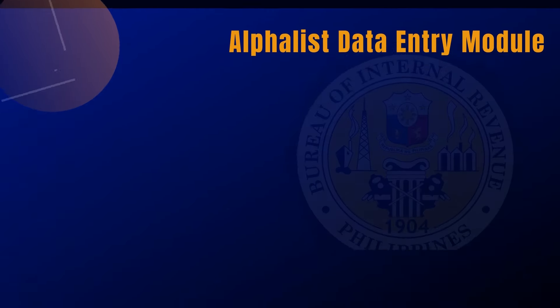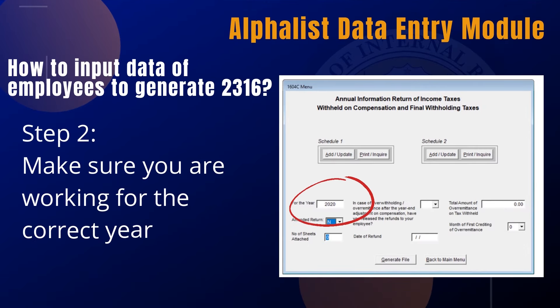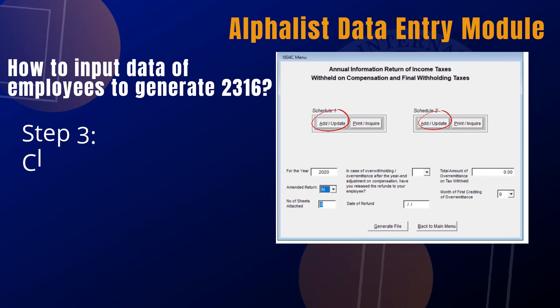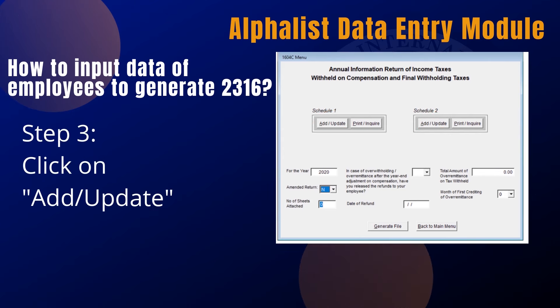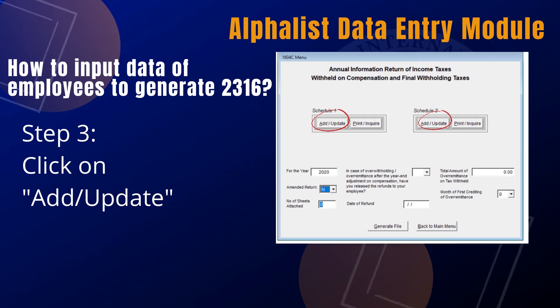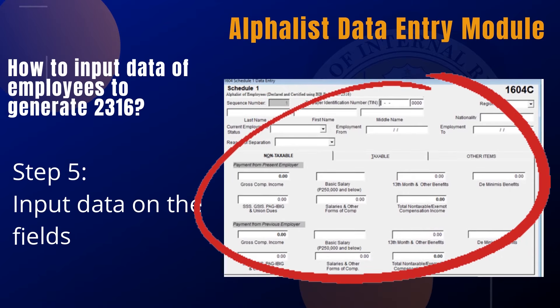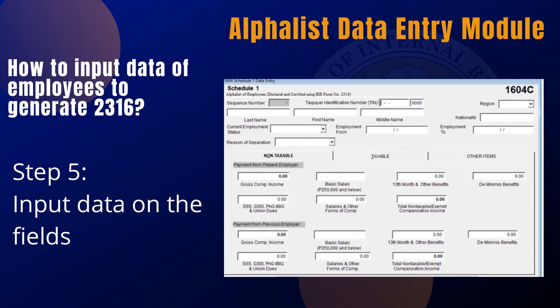Step 2, make sure you are working for the correct or applicable year. Step 3, click on the Add or Update tab. Schedule 1 is the Alphalist of Employees, while Schedule 2 is for Alphalist of Minimum Wage Earners, both declared and certified using BIR Form 2316. Step 4, click on the Add tab. Now you are ready to input the details on the fields — that's Step 5.